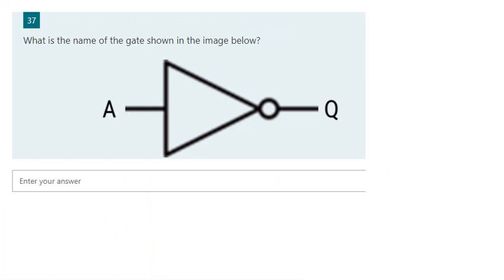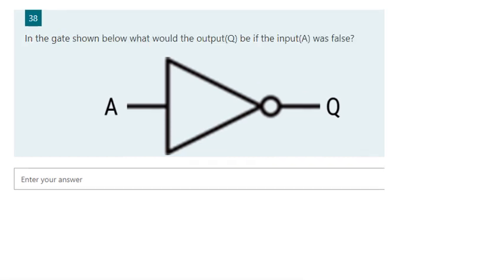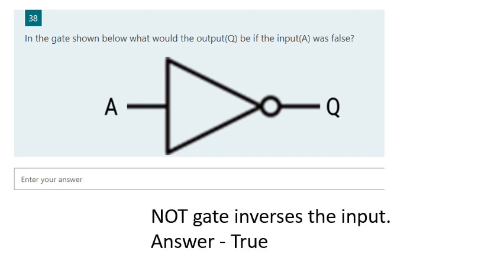This is a NOT gate — it inverses the input. For question 38: the gate shown is a NOT gate. What would the output be if the input was false? Since the rule is that it inverses the input, the output would be true.